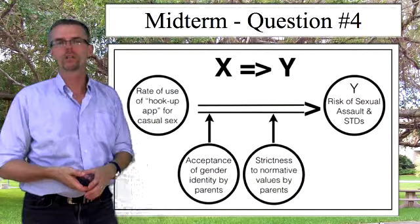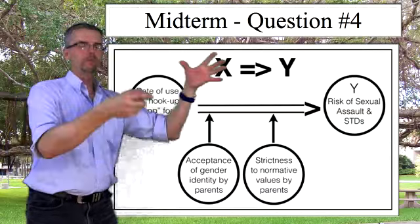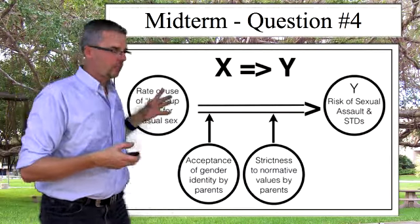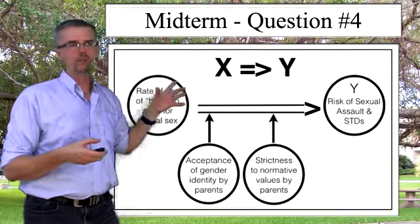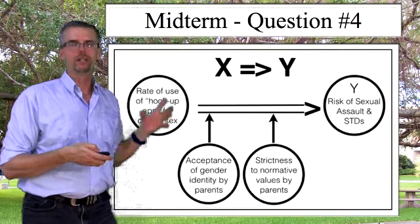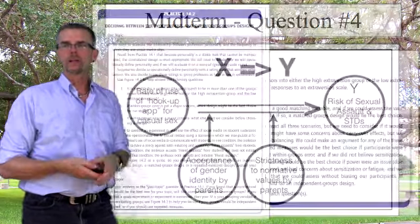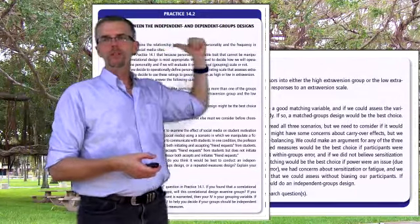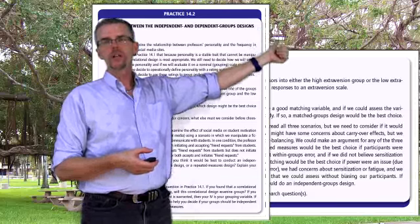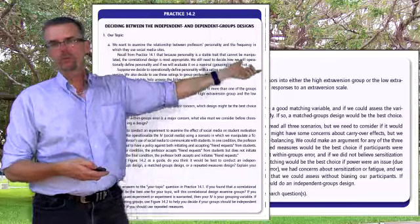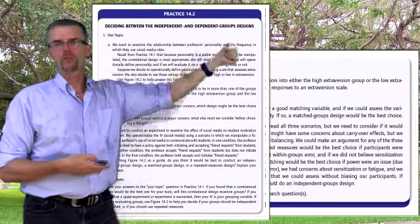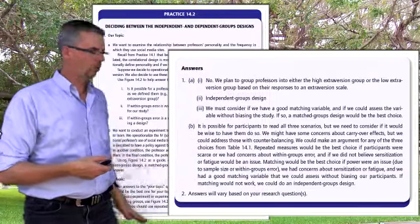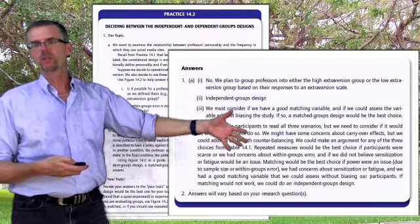Try to keep your research very tight. You can take an intervening variable off the table by acknowledging it exists but saying we're not going to look at it in this project. Practice 14.2 helps you decide between independent and dependent group designs — work through it. Part 1 gives good answers, but answers for part 2 will vary based on your research questions.